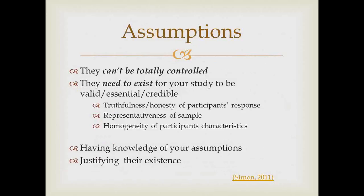Lastly, assumptions. They cannot be totally controlled, but they have to exist for your study to be credible. You can't really control the fact that participants will be honest and give you an honest response, but we have to assume that they're going to give an honest response for your findings to be credible. In some quantitative studies, we assume that your data is representative so that you can generalize to the population. We assume that maybe your population has some things in common — they are homogeneous, with homogeneity of characteristics or participant characteristics. Having knowledge about your assumptions is very important, and think about how you justify those assumptions.